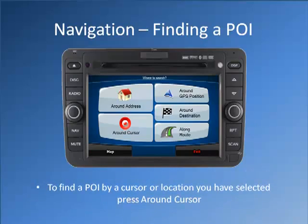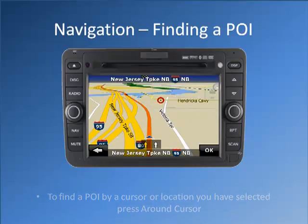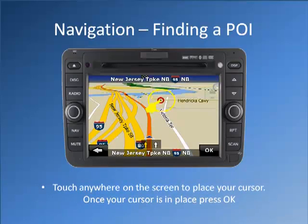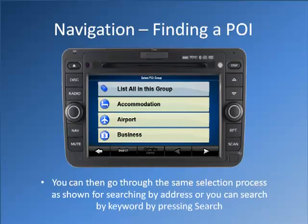To find a point of interest by a cursor or location you have selected, press Around Cursor. Touch anywhere on the screen to place your cursor. Once your cursor is in place, press OK. You can then go through the same selection process as shown for searching by address, or you can search by keyword by pressing Search.